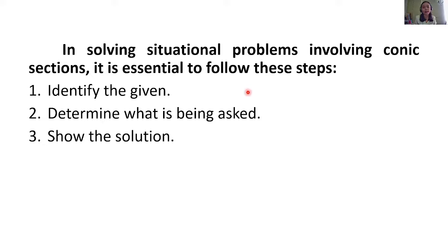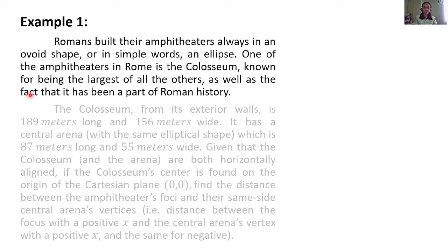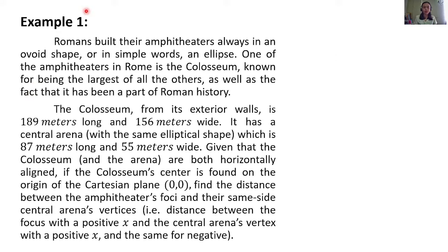So class, ayan yung susundin natin na steps sa pag-solve ng situational problems involving conic sections. Let's start with our first example. Example number one: Romans built their amphitheaters always in an ovoid shape, or in simple words, an ellipse.